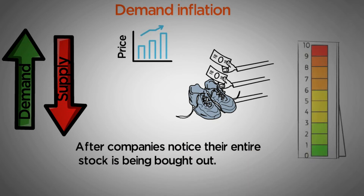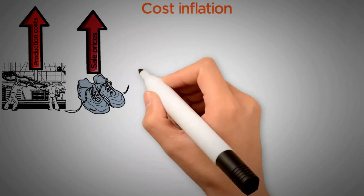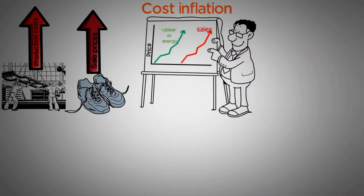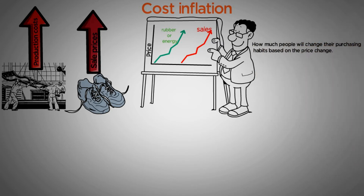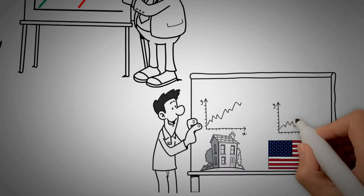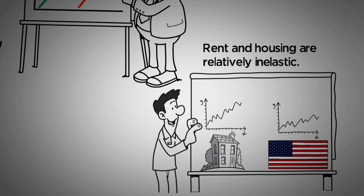That's why Zillow has that little meter calling different zip codes either a buyer's market or a seller's market. Secondly, cost inflation. When costs rise, companies will have to increase the sell price of their products to be able to shoulder them. For example, if rubber or energy costs rise noticeably, the manufacturing process will be more expensive, so companies will increase their sales price to assume this increase in costs without diminishing their profit margin. The extent to which a company will do this depends on the elasticity of their product's demand — how much people will change their purchasing habits based on the price change. One of the reasons that the general rate of inflation of real estate, especially rent, generally goes up faster than the rate of general US economy inflation is because rent and housing are relatively inelastic, meaning that even if housing costs go up 20%, you still need a place to live, so you'll pay that increased price if at all possible.